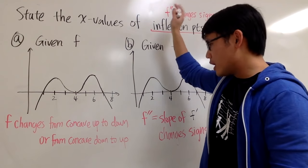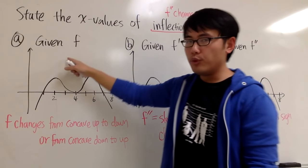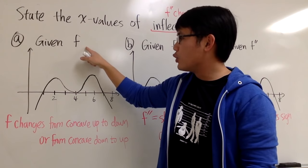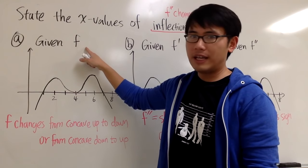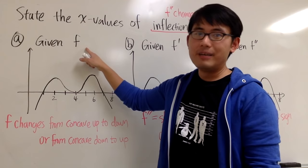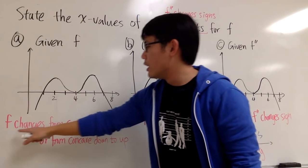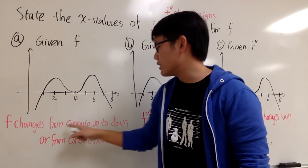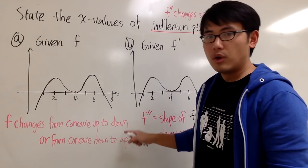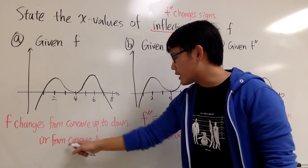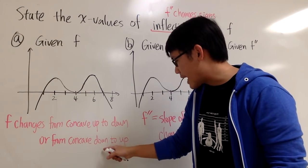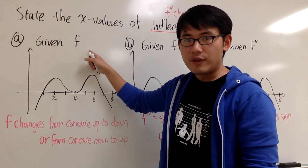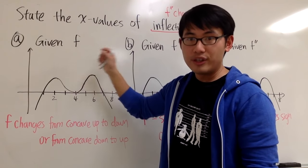For the first situation, if you are given the original function f, finding the inflection points is very easy. The inflection point is where f changes from concave up to down, or from concave down to up. You just look at the shape.